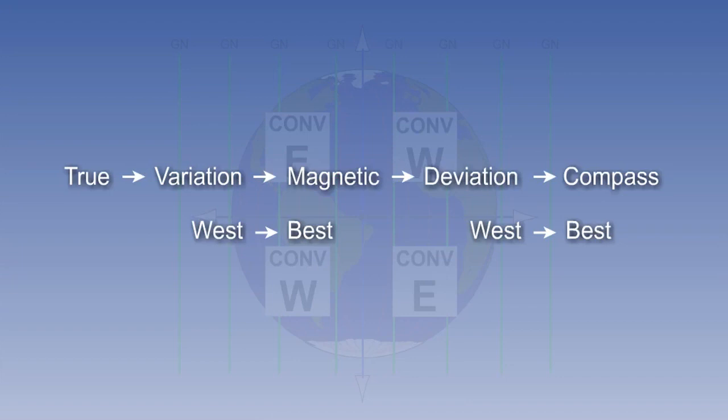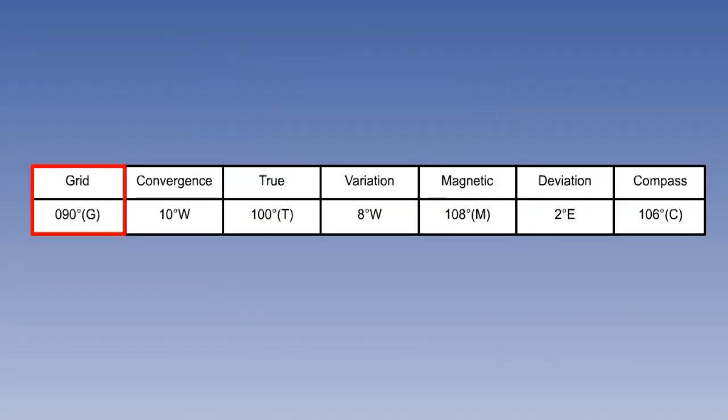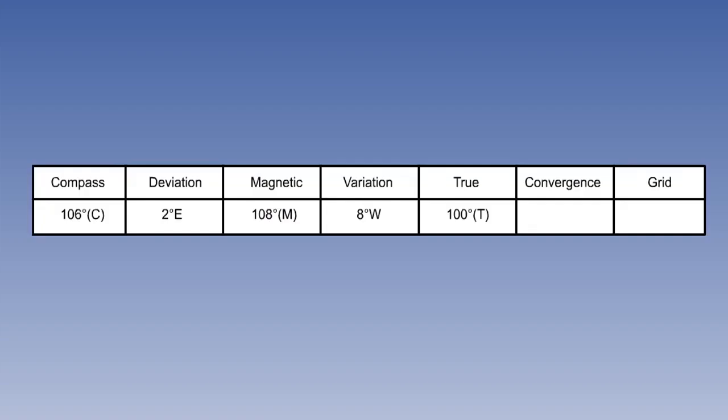Convergence follows the same pattern of conversion of direction as our previous conversions of true variation magnetic deviation compass. But note that it goes on the left-hand side of the columns if going from true to compass. So, to give an example, if the grid heading is 090 and the convergence is 10 west, then true will be 100. The rest fills in in the familiar way. And, as you would expect, we follow the same rules when working from compass to true to grid. If the true heading is 100 and the convergence is 10 west, then grid must be 10 degrees less than true, giving us a grid heading of 090.